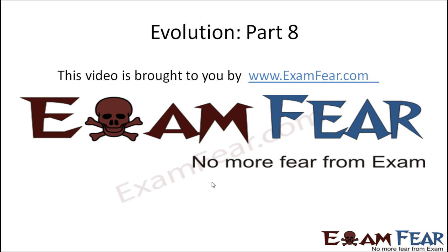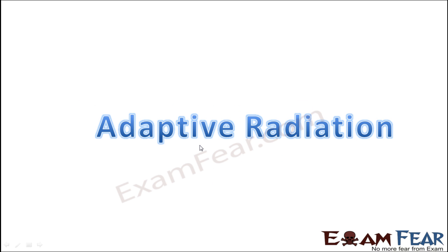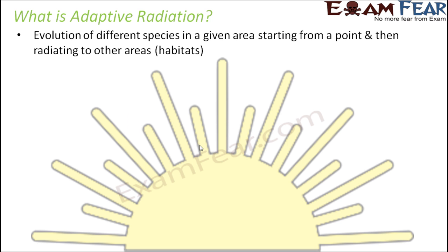Hello friends, this video on evolution part 8 is brought to you by examfear.com — no more fear from exam. Now we will look at yet another form of evolution, that is adaptive radiation. It is evolution of different species in a given area, starting from a point and then radiating to other areas.